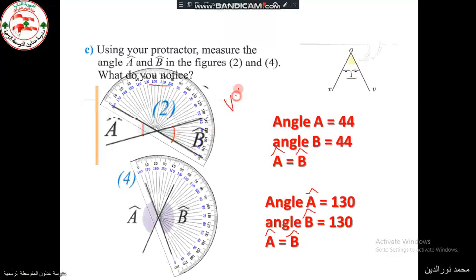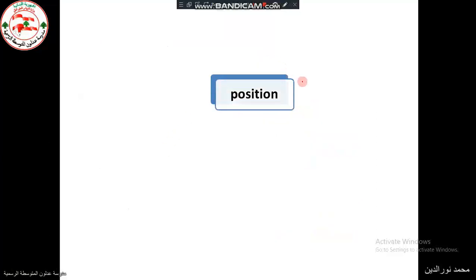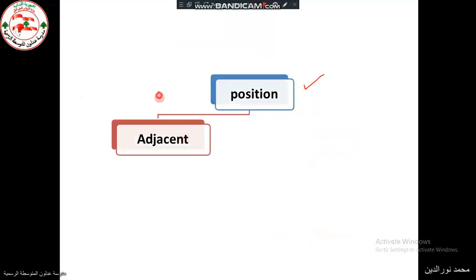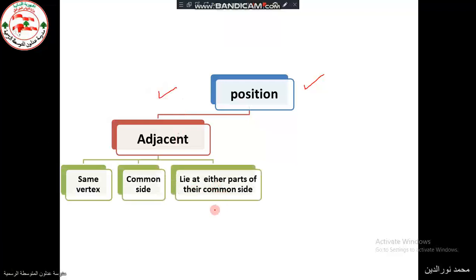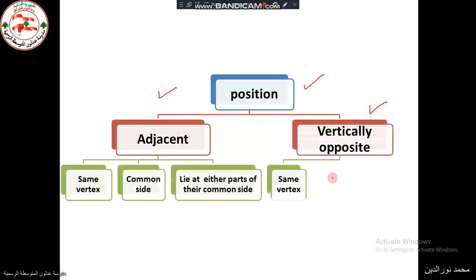These angles are called vertically opposite angles. The conditions to be fulfilled are: the angles must have a common vertex and the side of one must be a prolongation of the other. For the flowchart of particularity of position: angles are adjacent if they have the same vertex, a common side, and lie at either parts of their common side.